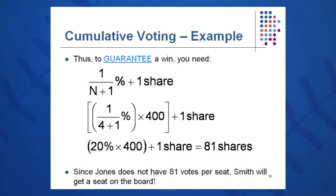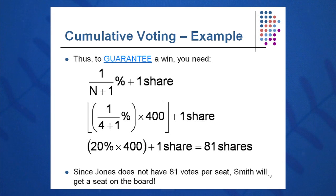Smith needs one over four plus one, which is one-fifth — or 20% — times 400 votes available. 20% of 400 is 80, plus one share equals 81 shares. So Smith will need 81 votes to guarantee himself a seat on the board of directors, with no ties included.